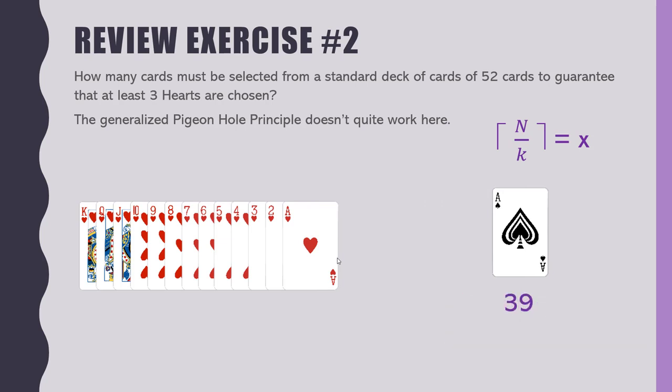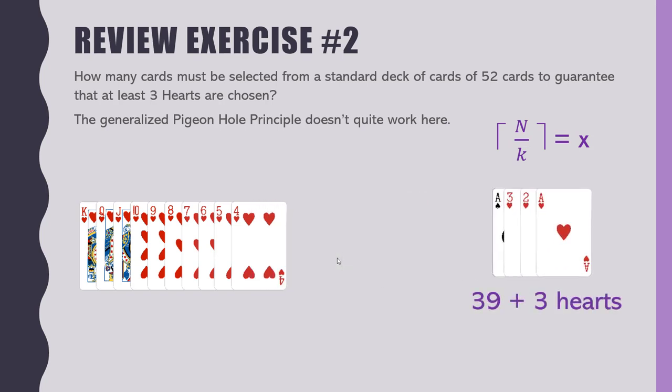Then to guarantee three hearts, pick three more. 39 plus 3 is 42 — the answer to life, the universe, and everything. So to guarantee at least three hearts, you need 42 cards. We could have gotten three hearts right off the bat, but that's not a guarantee. I have a deck here — I'll try it. One, two, three: all black cards — two spades and a club. It could have been three hearts, but it wasn't.